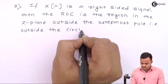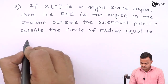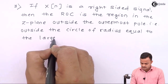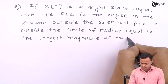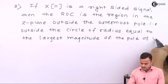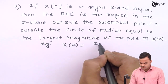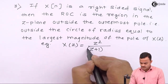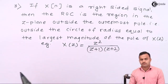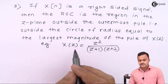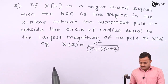That is, it is outside the circle of radius equal to the largest magnitude of the pole of X(z). So once again, let's consider the example X(z) = z² / [(z+1)(z+2)]. You have to get the inverse Z-transform to find x(n). By looking at X(z) and the pole-zero locations, we can predict whether the signal will be left-sided or right-sided.